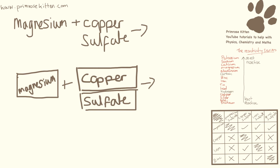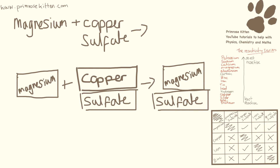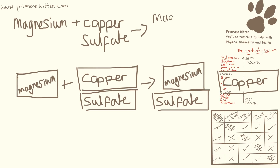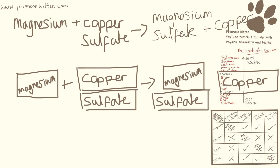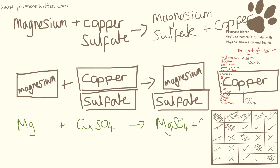One situation where we did get a reaction is magnesium and copper sulphate. The magnesium is more reactive than the copper, so it takes the sulphate away from it. The magnesium ends up with the sulphate, which leaves the copper on its own. The word equation is: magnesium + copper sulphate → magnesium sulphate + copper.